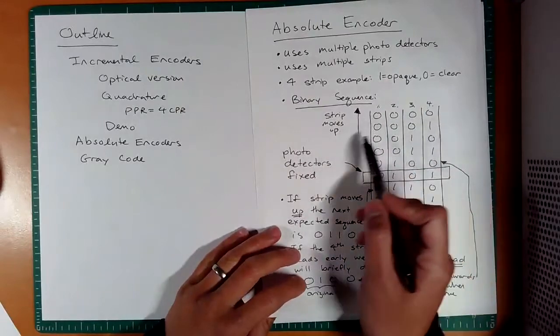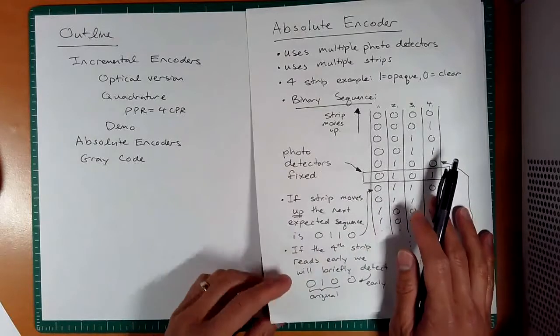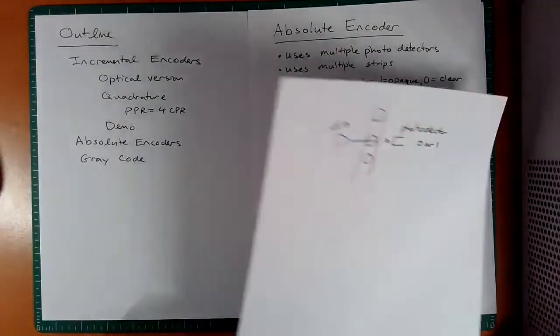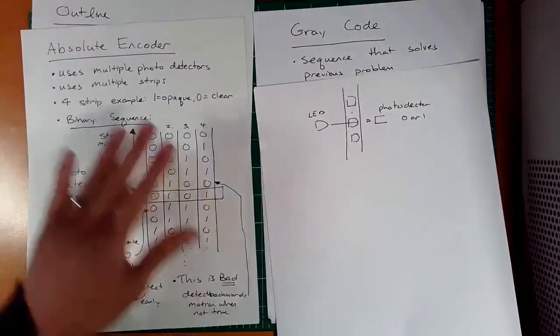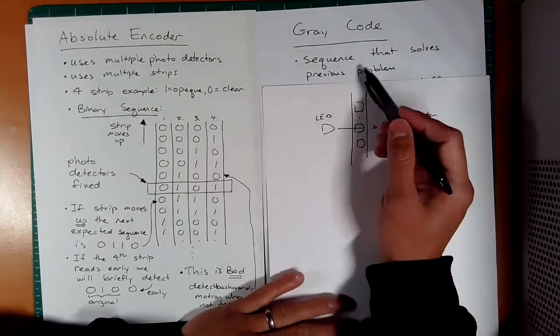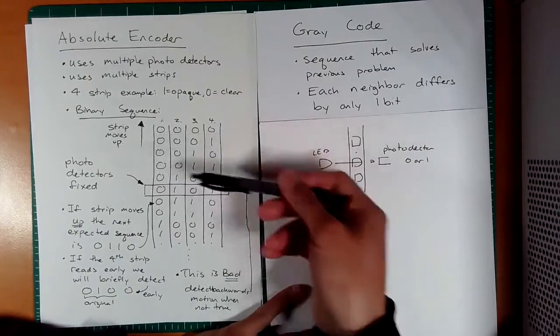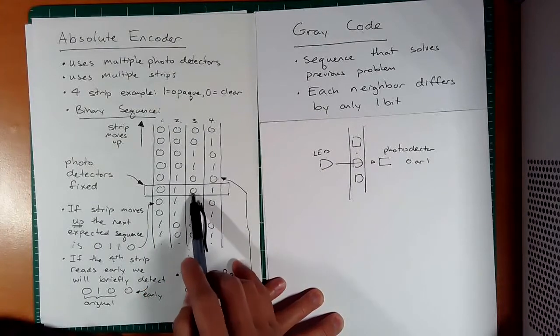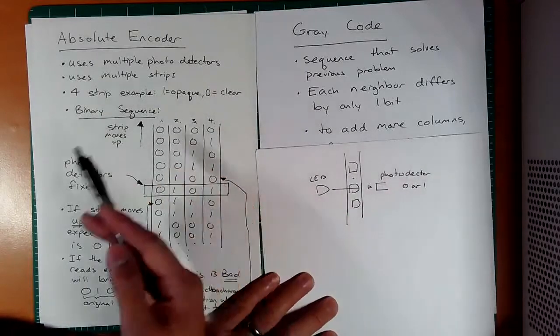But I think you guys have the idea of what an absolute encoder does. You have multiple strips, every row here is a unique position, which is great, so you can know where you are. But maybe we can use a different type of sequence other than binary, and that is going to be gray code. So what is gray code, and why is it going to benefit us in this kind of situation where you can see we get a false answer? This is a sequence that solves that problem, and each neighbor only differs by one bit, that's actually going to be nice. Notice here, we differed in this case by two bits.